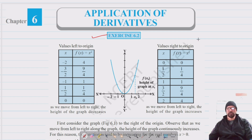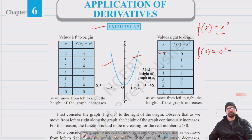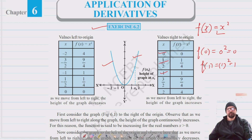To understand increasing and decreasing functions, let's consider the function f(x) = x². The graph of this function is a parabola. If we consider values to the right of the origin: f(0) = 0² = 0, f(1/2) = 1/4, and f(1) = 1² = 1. We just replace the value of x to get the value of the function at that point.